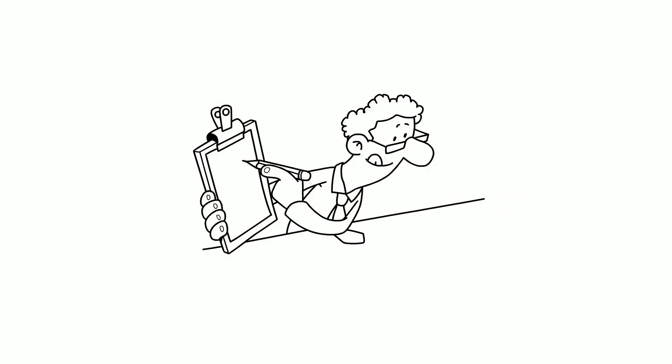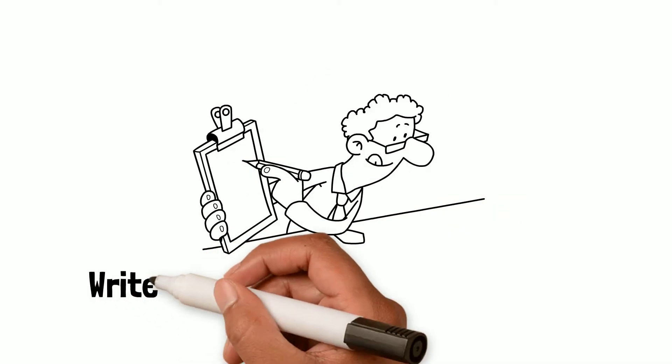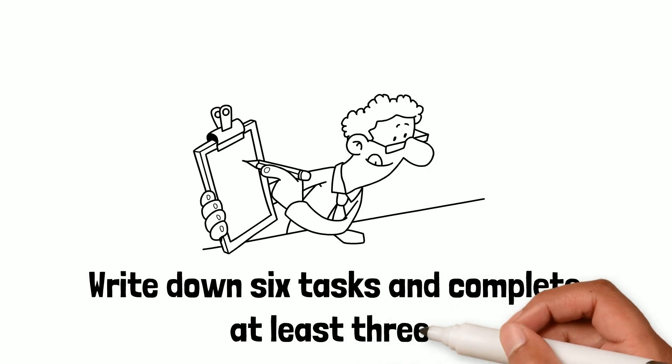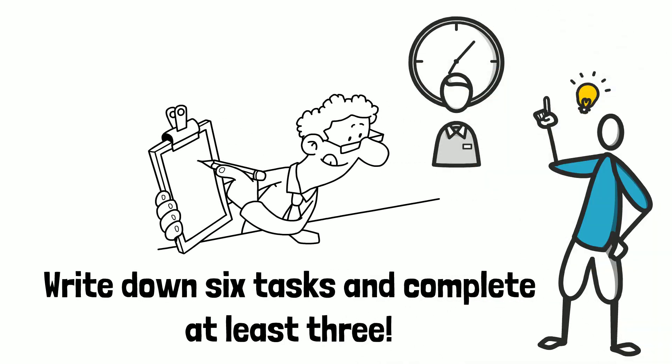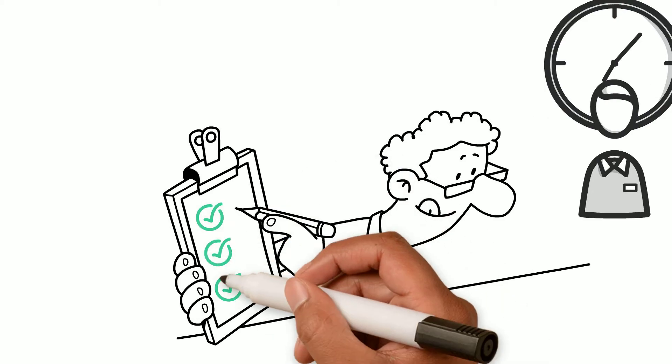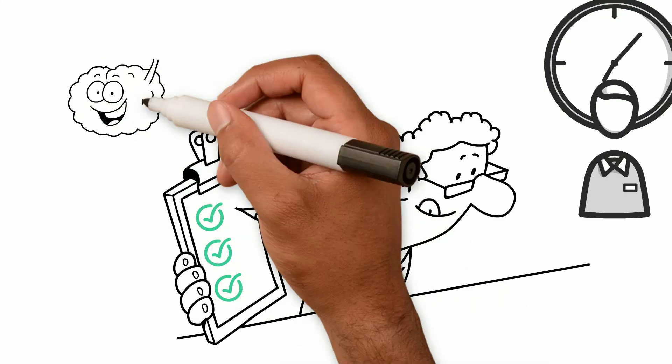Tracy suggests that a good way to counteract procrastination is something called the law of three. It's time to grab that pen and paper again. In any given day, writing down at least six tasks and making sure you complete at least three is a brilliant way of making the most of your time. Once three of these tasks are complete, then you have trained your brain to be productive.